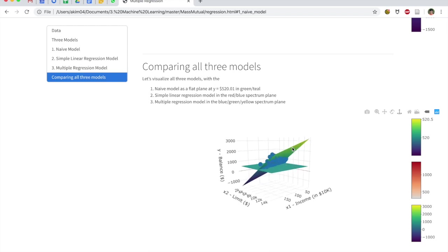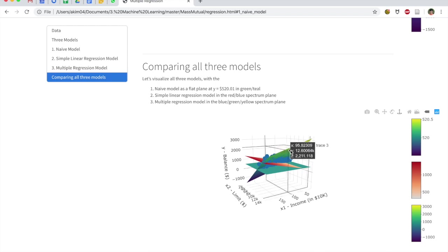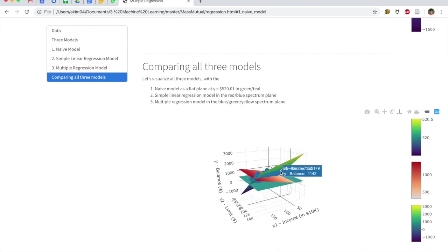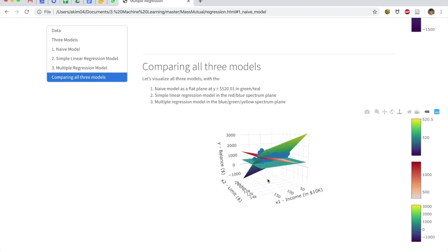And then last but not least, we have the regression plane for our multiple regression model. That is, now the value on the z, which is credit card balance, now changes as a function of both limit and income. And notice how in both cases, the simple linear regression model in red as well as the multiple regression model using this color palette all sort of dance around the naive model.